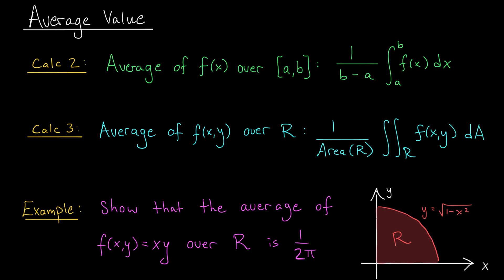In calc 3, the situation is exactly the same. If you want to know the average value of a 2-variable function over some region r, well, you can add up or integrate the values of your function over that two-dimensional region, and then divide by the total amount. You're going to divide by the area of the region.